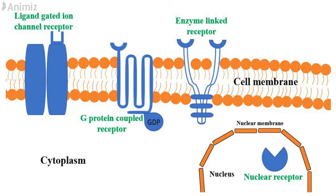There are four types of receptors present in a cell: ligand-gated ion channel receptors, G-protein coupled receptors, enzyme-linked receptors, and nuclear receptors. The first three, which are present on the cell membrane, are called transcellular receptors, and the fourth, the nuclear receptor, is called the intracellular receptor.